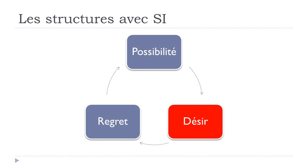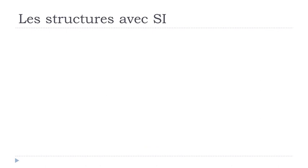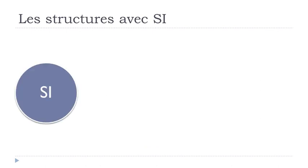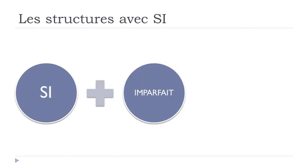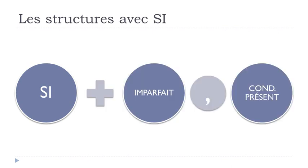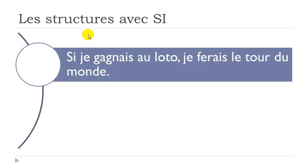Second category: if you want to express the DESIRE, LE DÉSIR, we will use SI avec L'IMPARFAIT, followed by LE CONDITIONNEL PRÉSENT. So: SI plus IMPARFAIT, then CONDITIONNEL PRÉSENT. Let's take one example.